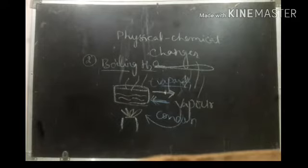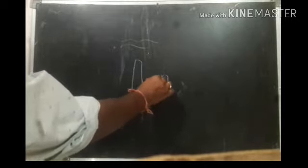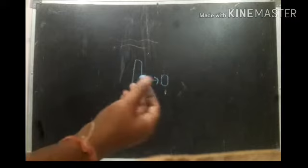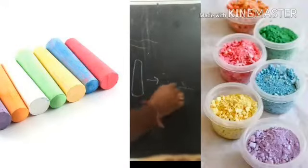Next, let us look at the example of a chalk stick. We write many things on the board. When I go on writing with a full chalk piece, the size of the chalk slowly decreases and becomes very small. Why? Because the chalk is transferred onto the board in powdery form — the total chalk piece becomes powdery form.